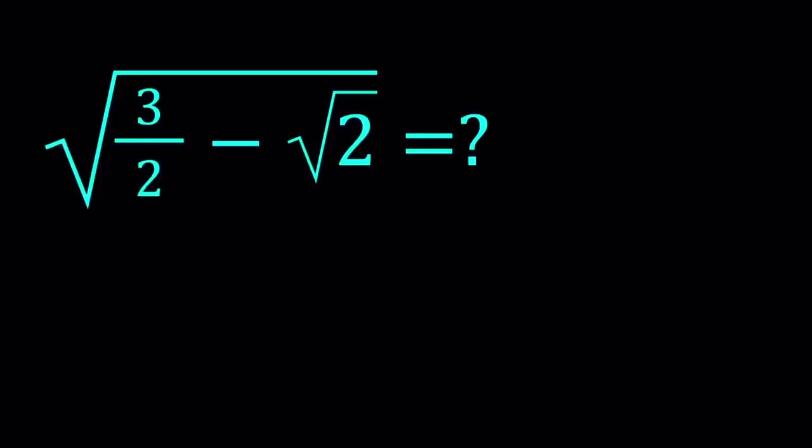Hello everyone. In this video, we're going to be simplifying a radical expression. We have the square root of 3 over 2 minus square root of 2, and we're going to write this in a simpler way. I'll be presenting three methods. Let's start with the first one.